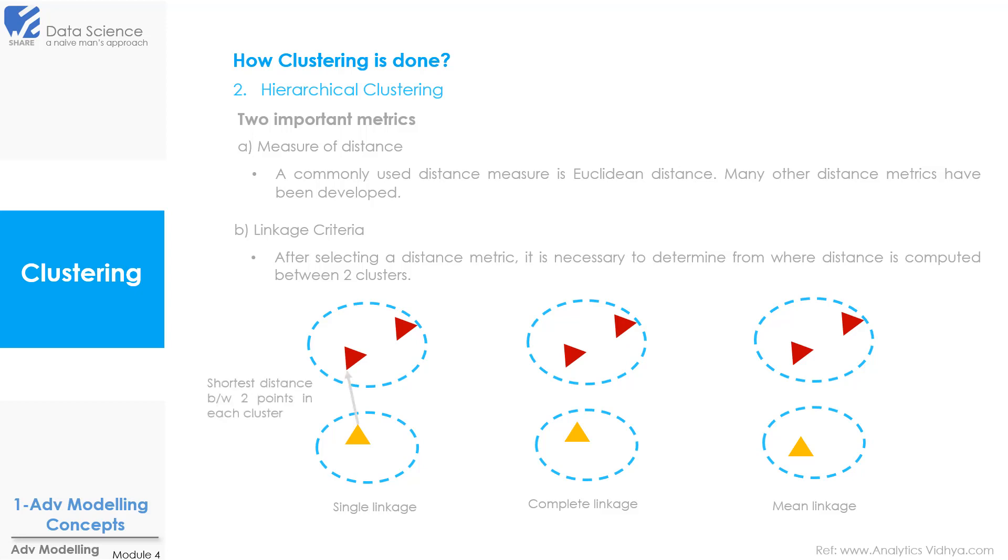Single linkage is the shortest distance between two points in each cluster. Then complete linkage is the largest distance between two points in each cluster. And mean linkage is the average distance between two points in each cluster.